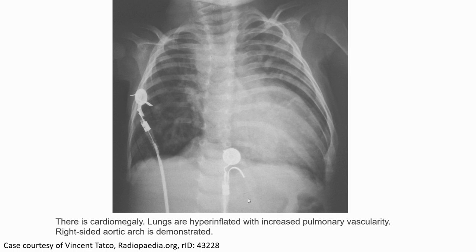Here is another case of truncus arteriosus. We can see cardiomegaly with lung and high pulmonary vascularity with increased pulmonary vasculature. The right-sided aortic arch is demonstrated.